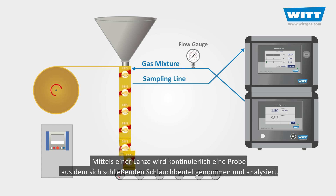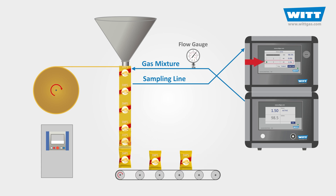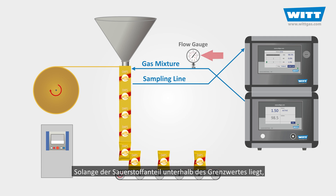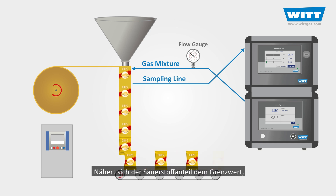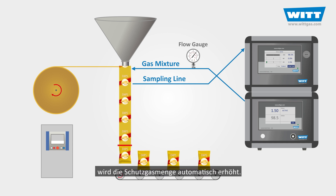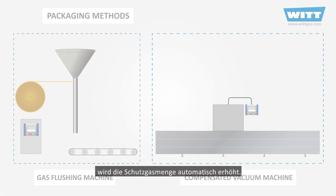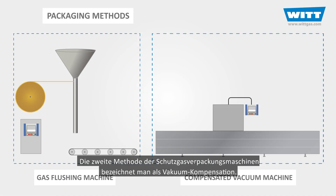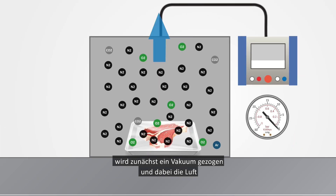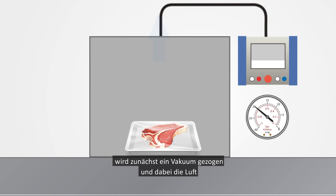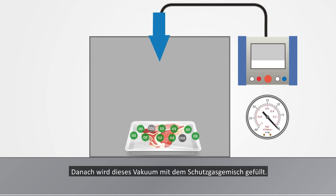By means of a lance, a sample is taken continuously from the pillow bag and analyzed. As long as the oxygen value is below the set limit value, the amount of supplied protective gas is reduced. If the oxygen content approaches the limit value, the protective gas quantity is automatically increased. The second method is called compensated vacuum. In this method, the machine first removes the air inside by pulling a vacuum within the package, and then breaks the vacuum with the desired gas mixture.